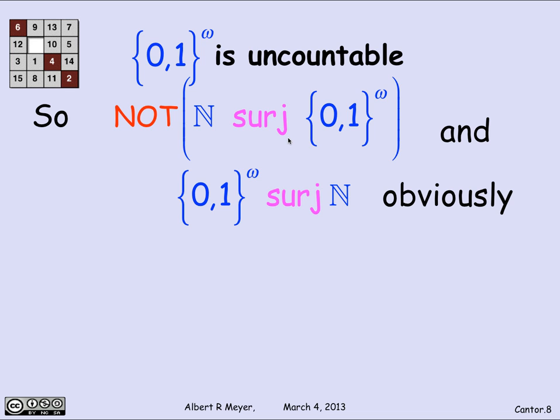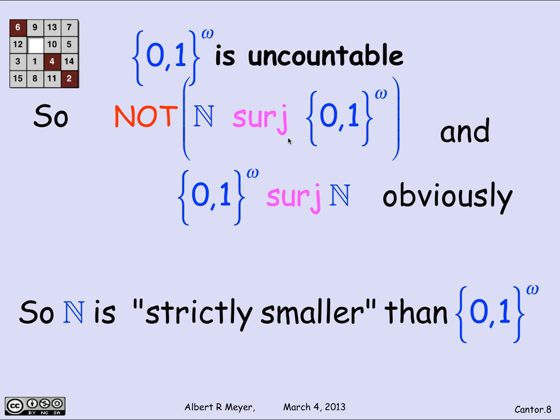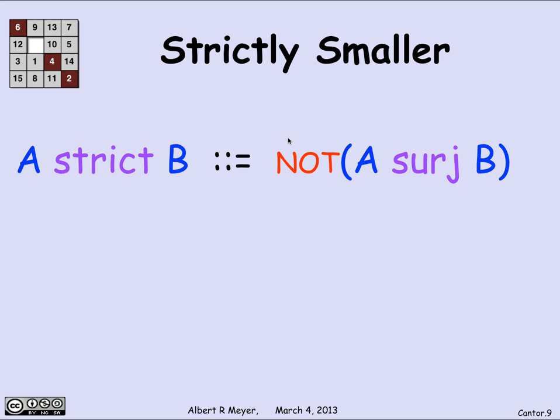The negated assertion says it's not the case that ℕ is as big as {0,1}^ω — the natural numbers are strictly smaller than the set of infinite binary sequences. I'll define A strict B to mean there is no surjection from A to B; it's not the case that A is at least as big as B. It's a technical theorem that if there's no surjection from A to B, then there is a surjection in the other direction. So it's easy to check strict: A strict B just means there's not a surjection from A to B, which we interpret as A being strictly smaller than B.